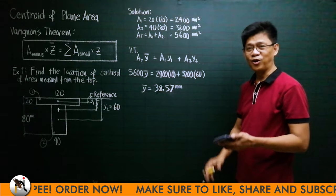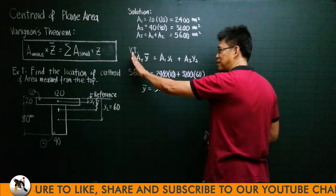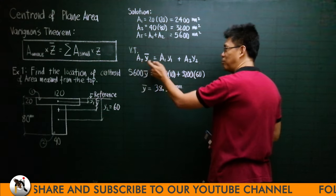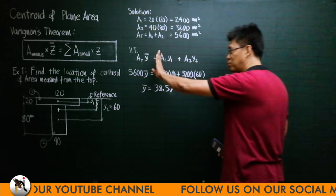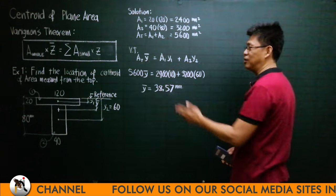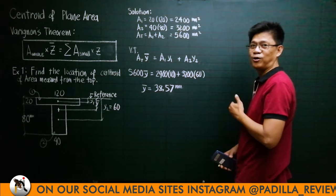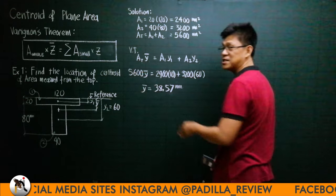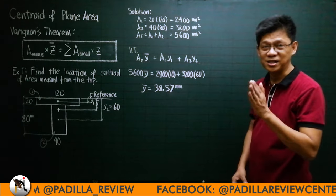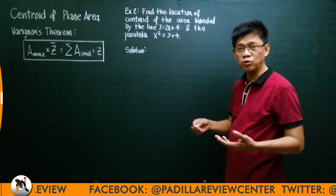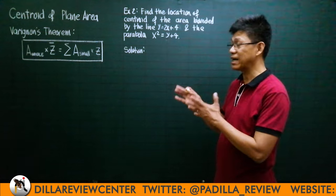All you need to do: if you multiply the left side by Y-bar, multiply each area by Y also. If you multiply by X-bar, multiply each area by X. If you multiply by Z-bar, multiply the small areas by Z also. So, how do we locate the centroid when it is not a regular area?